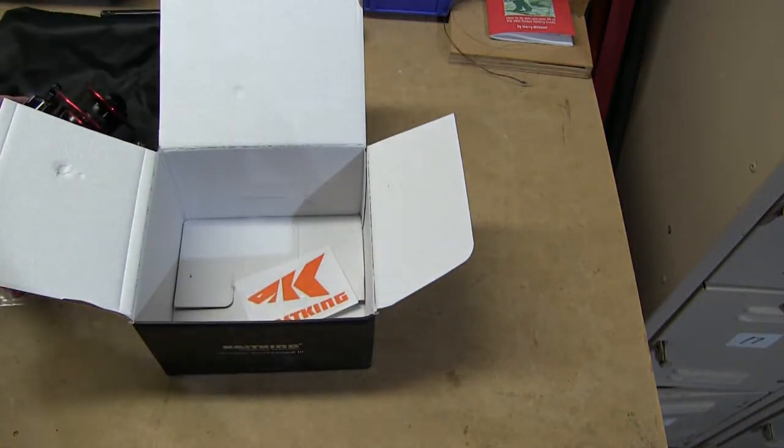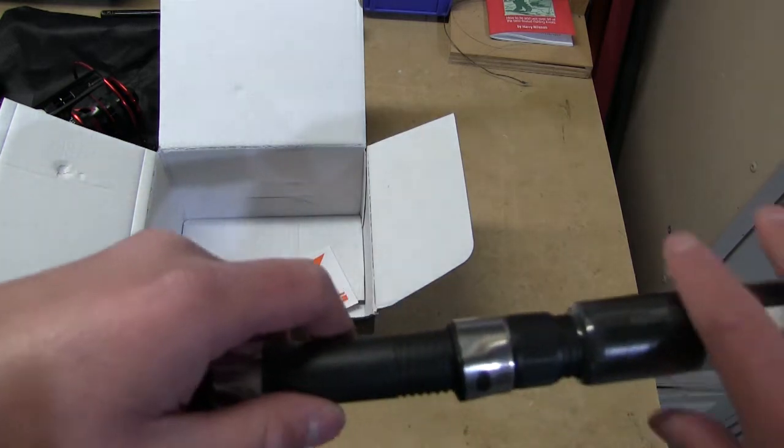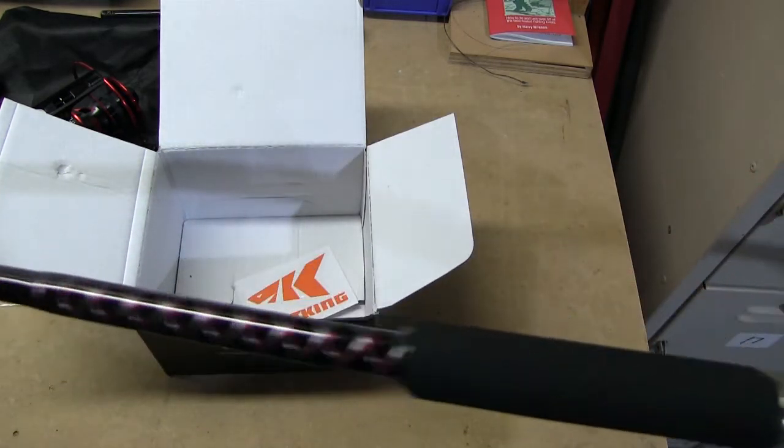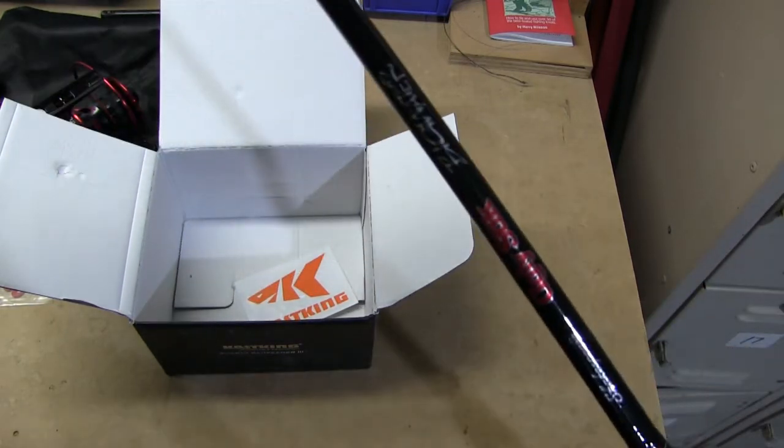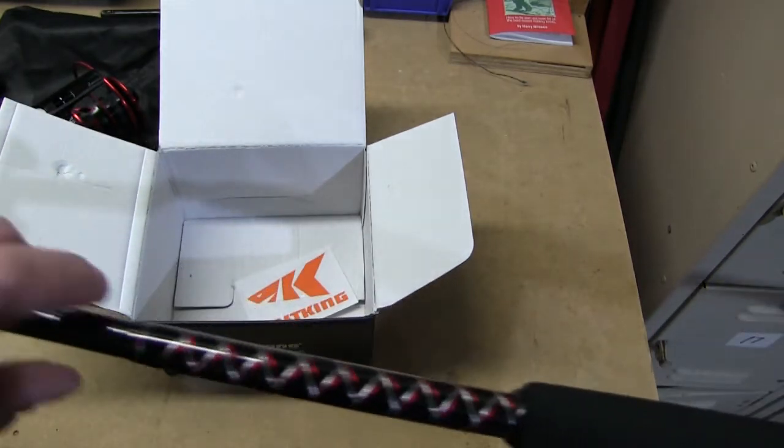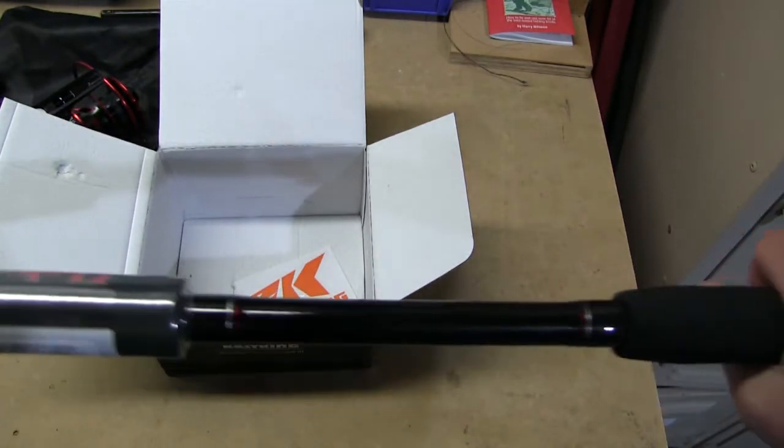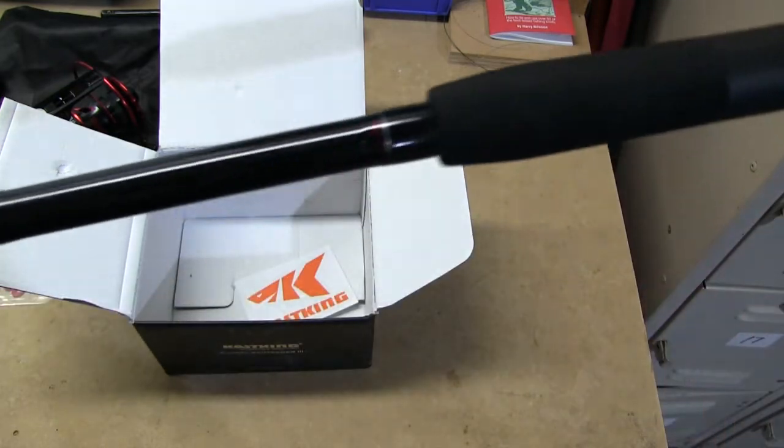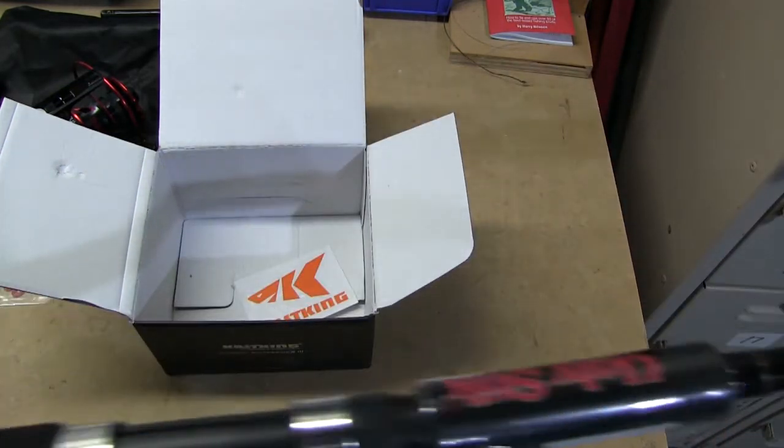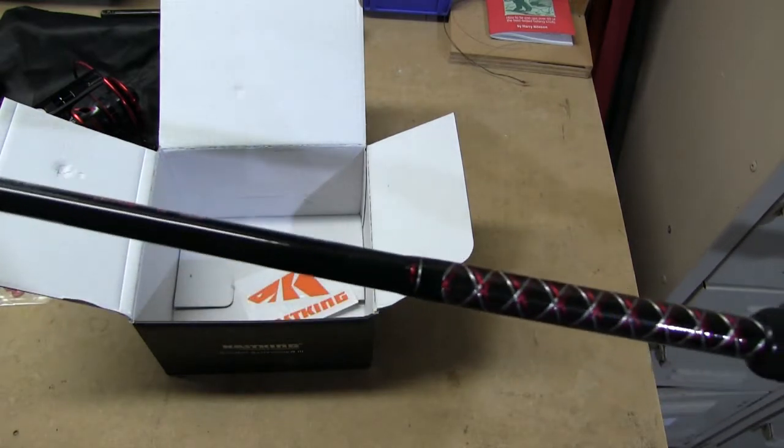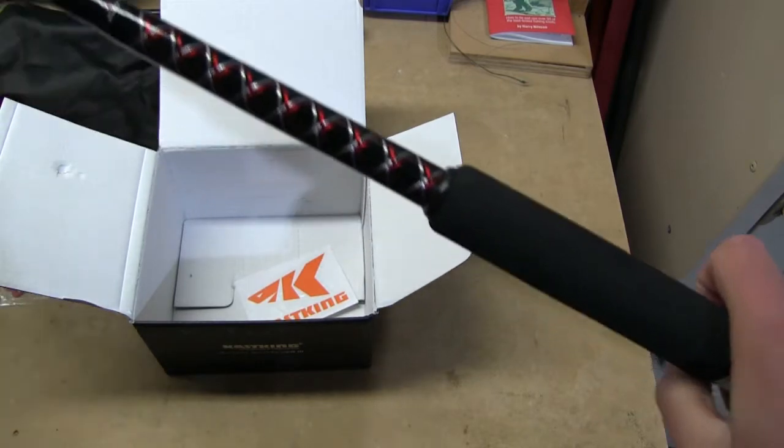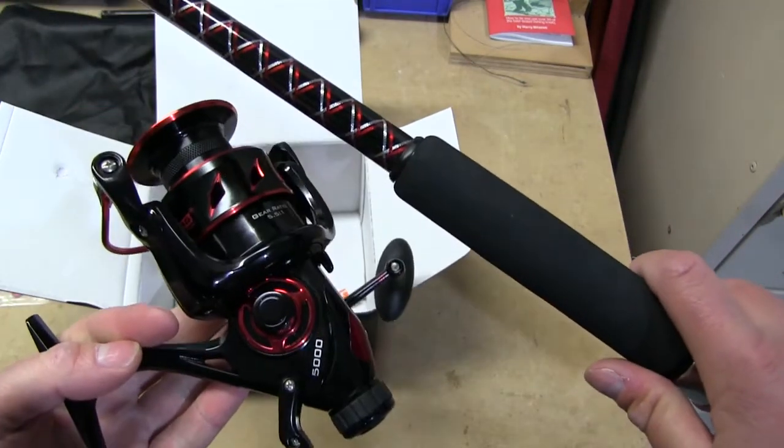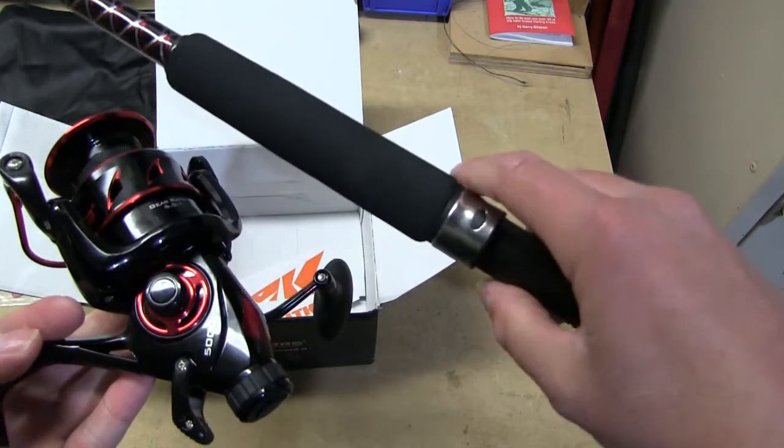I'm gonna be putting this reel on an Ugly Stik Big Water eight-foot medium action spinning rod. So that will be what it is paired with. And not that it matters, but if you're into cosmetics, the Ugly Stik Big Water is red and black, so these two are gonna look like they were made for each other. That's kind of cool that it will match like that.